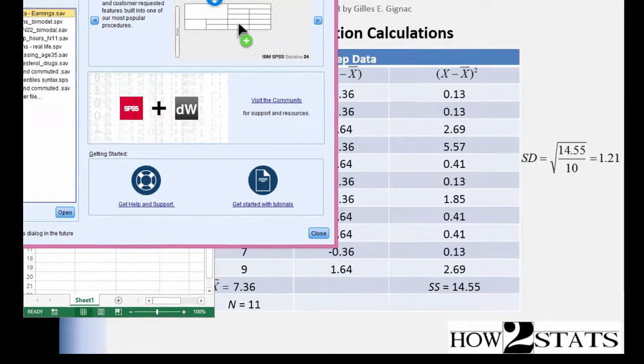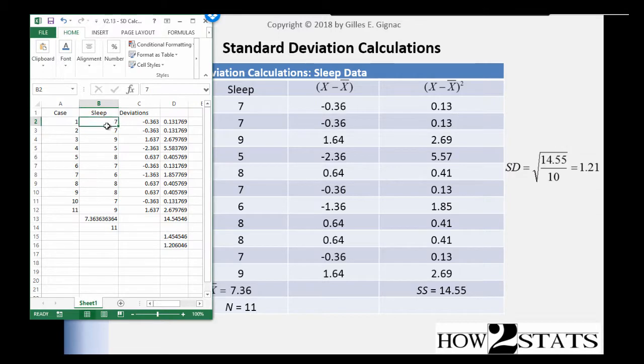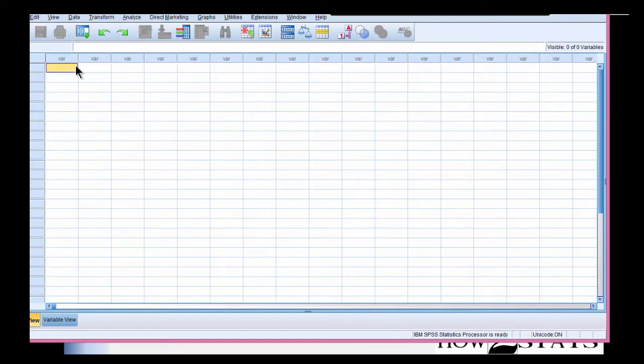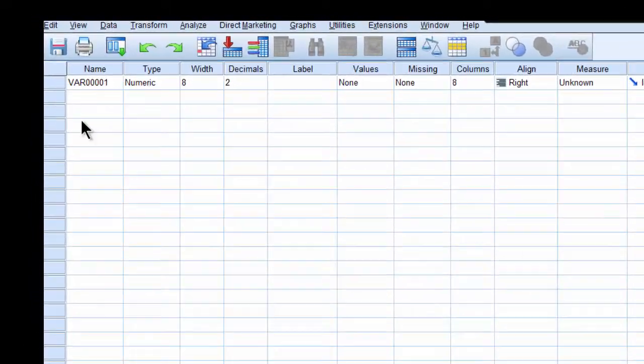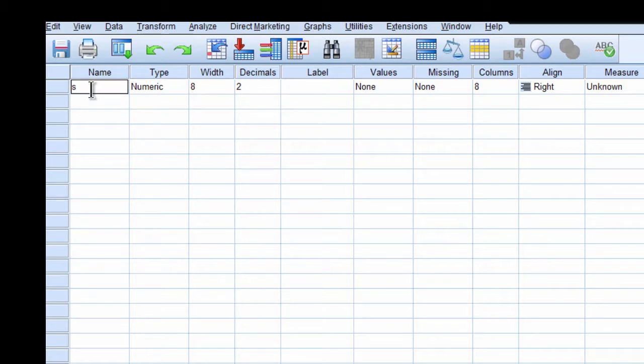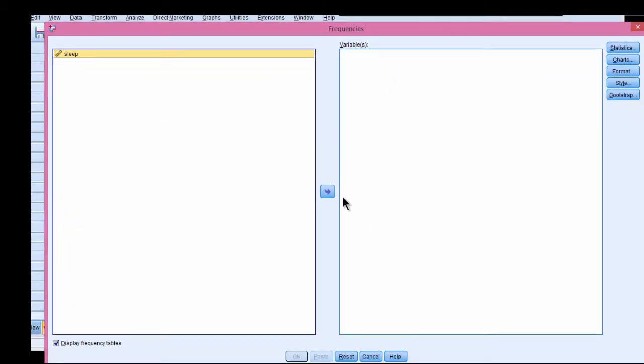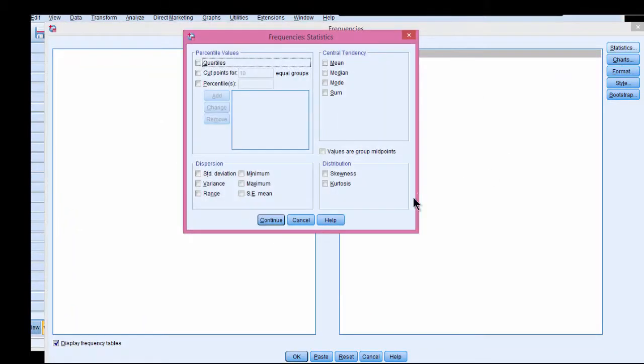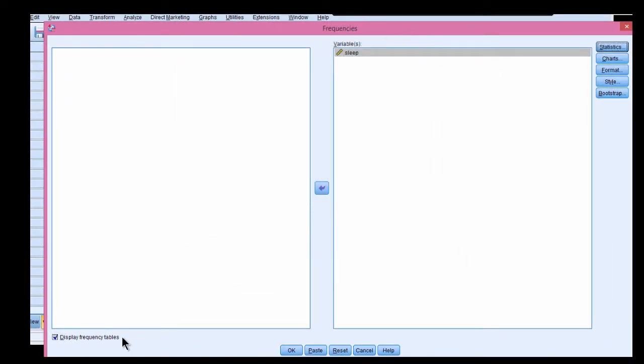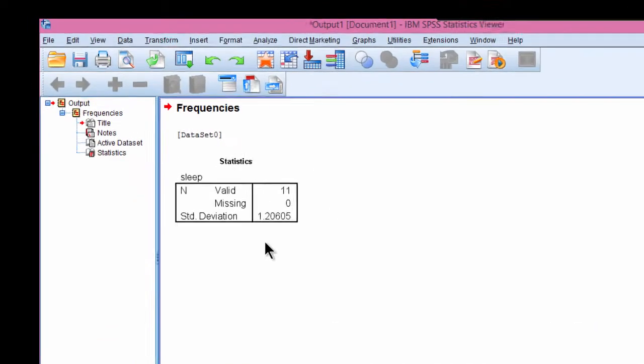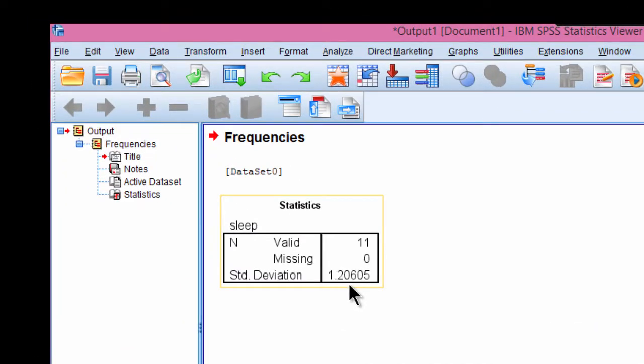Now a much quicker way to do it is in SPSS. We can grab the data from here, put it in SPSS, and then we can call that sleep, and analyze frequencies, put the sleep variable in there, statistics, standard deviation right here, continue. We don't want the display frequencies, click OK, and SPSS gives us the 1.206 or rounded 1.21.